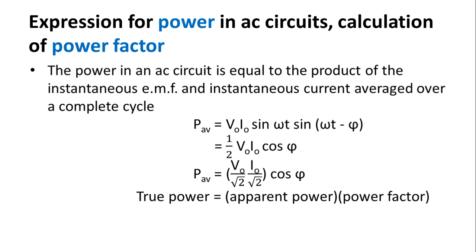Now, let us discuss the expression for power in AC circuits and calculation of power factor. As you know, power in a DC circuit is the product of voltage and current. In the same way, we can define power in an AC circuit also. The power in an AC circuit is equal to the product of the instantaneous EMF and instantaneous current, which is averaged over a complete cycle.